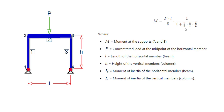The importance of this equation is that it adjusts the moment at the supports of a frame based on the distribution of stiffness between the columns and the beams. This is crucial in understanding how different member properties like size and material influence the load carrying capacity and bending moments in a frame structure. This equation is particularly useful in designing frame structures where beam and column sizes vary, or in optimizing material use while ensuring structural integrity.